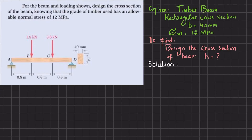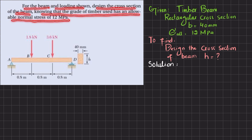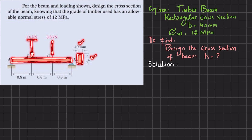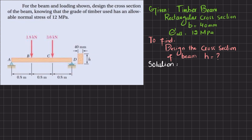Welcome back. The problem statement is: for the beam and loading shown, design the cross-section of the beam, knowing that the grade of timber beam used has an allowable normal stress of 12 megapascals. This is a simply supported timber beam. The cross-section has a breadth of 40 millimeters and an unknown height. The loading at point B is 1.8 kilonewtons, at point C is 3.6 kilonewtons, and the total beam length is 2.4 meters.